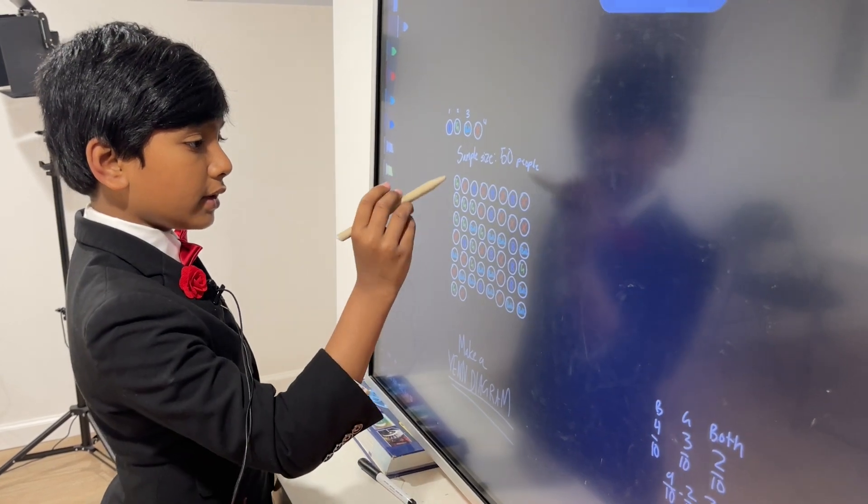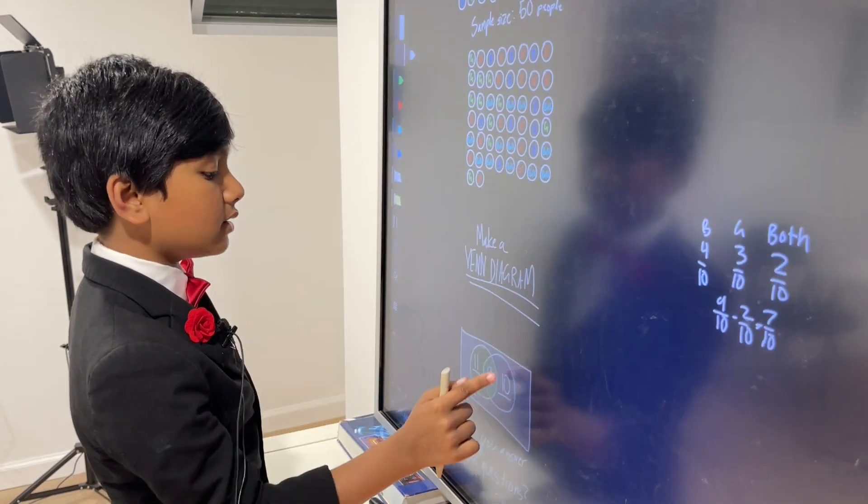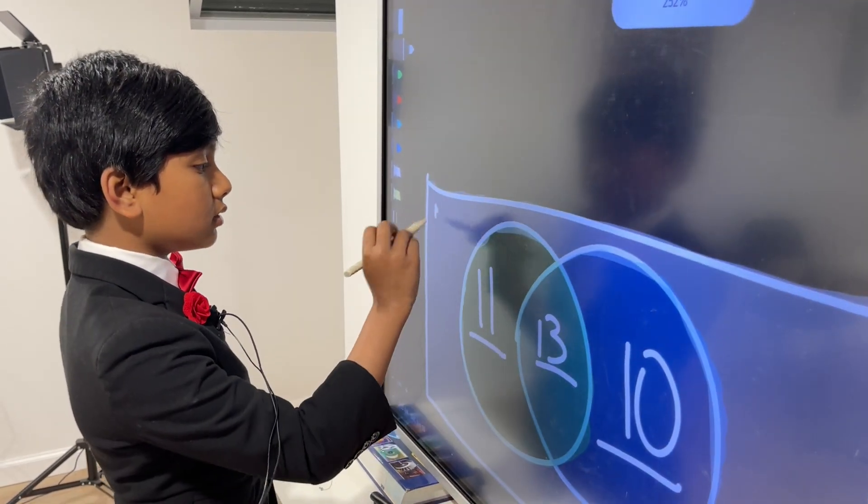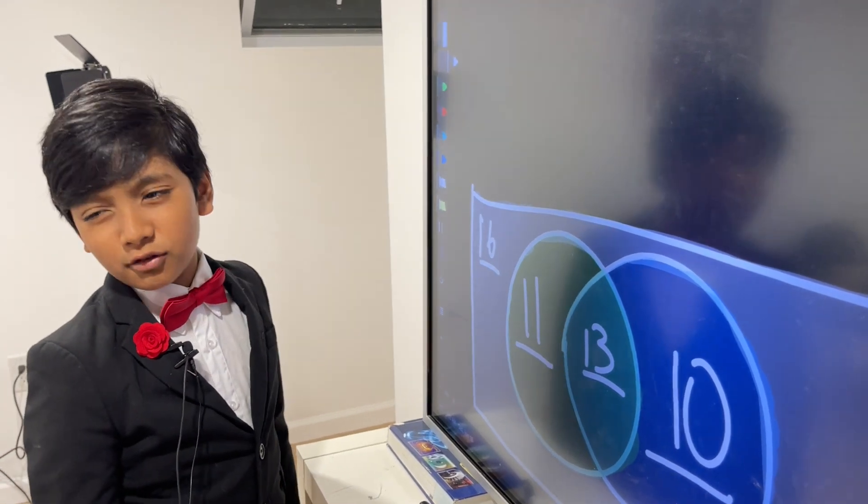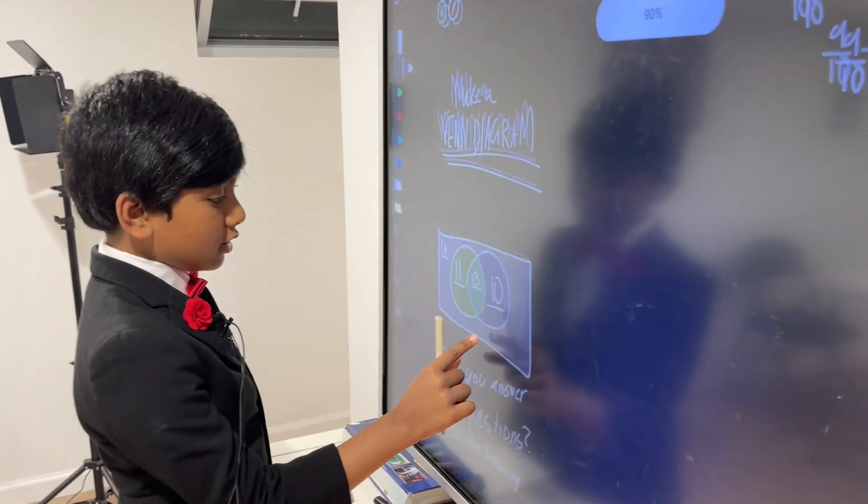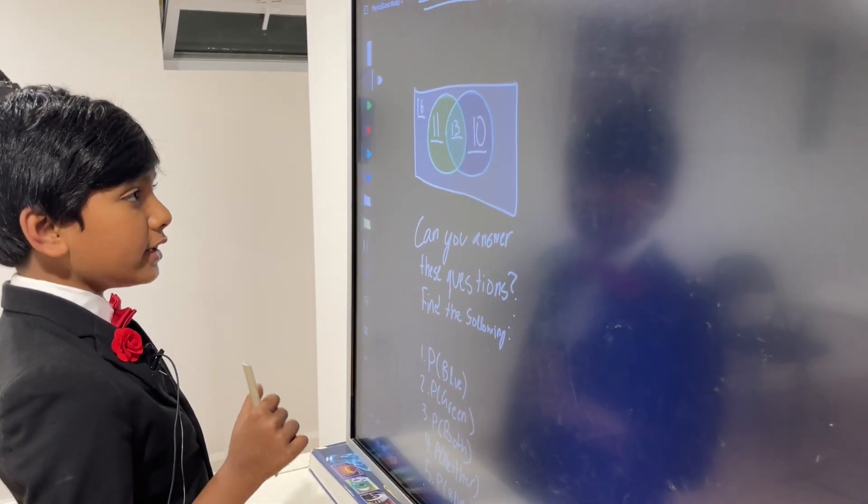And one, two, three, four, five, six, seven, eight, nine, ten, eleven, twelve, thirteen, fourteen, fifteen, sixteen who like neither. This is definitely not based on actual stats. It's based on a random number generator. I'm sorry. So, can you answer these questions? Find the following.